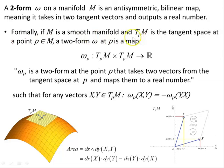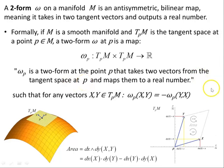Formally, if M is a smooth manifold and the tangent space to the manifold at point P — where P belongs to M — a two-form omega at P is a map from TpM × TpM to the reals. So omega is a two-form at point P that takes two vectors from the tangent space at P and maps them to a real number, such that for any vectors X, Y in TpM, omega_P(X,Y) = −omega_P(Y,X). Notice swapping the order of the vectors gives a negative result — it is anti-symmetric.